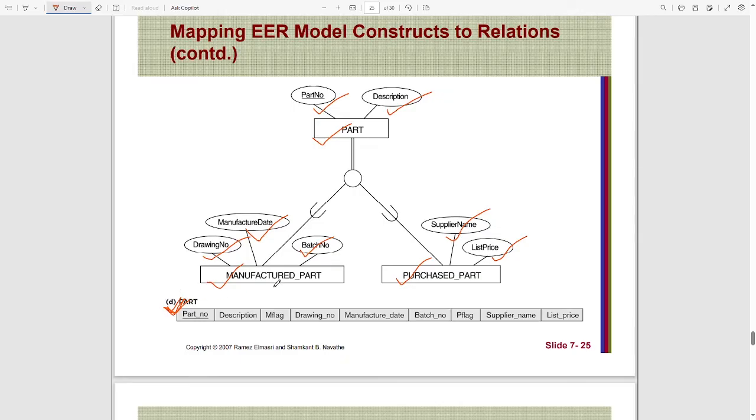For two subclasses, we can see two type attributes which are M Flag and P Flag. The M Flag stands for Manufactured Part. The P Flag stands for Purchased Part. If the P Flag is one and the value of M Flag is zero, it means that this part has been purchased but not manufactured.